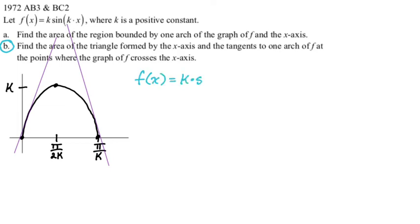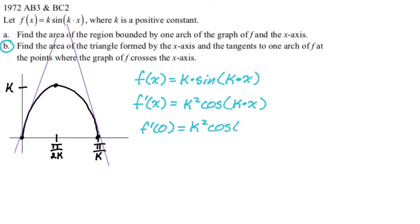All right. So f of x is k times sine of kx. We have to find f prime. Remember, x is the only variable. So this is not like a product rule or anything. It's just the derivative of sine of kx is cosine of kx times k by the chain rule. And there was already a k. So k squared cosine of kx. And we're going to plug in 0 because that's where one of the tangent lines is. So k squared. Remember, we're plugging in for x. Cosine of 0. The cosine of 0 is 1. So this just gives us k squared. We also need to plug in π over k. So f prime of π over k is going to be k squared. And then you end up with the cosine of π because the k's cancel. Cosine of π is negative 1. So this is negative k squared.